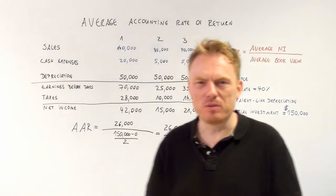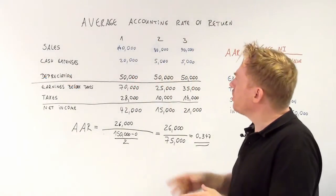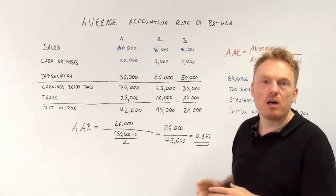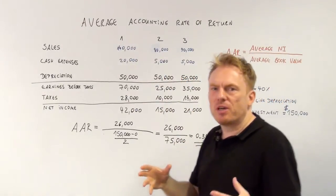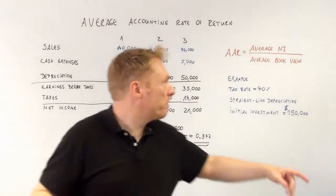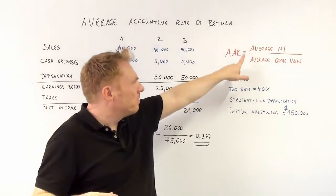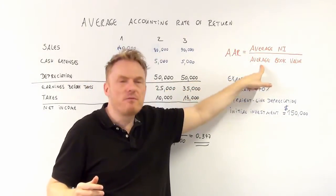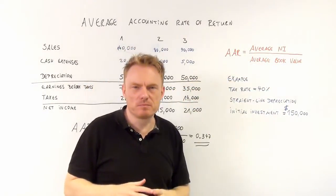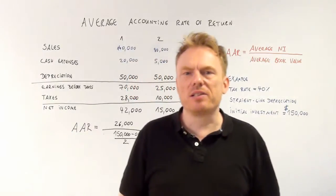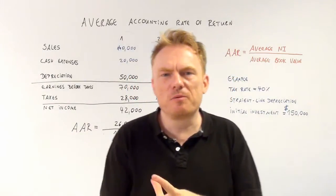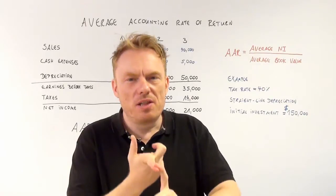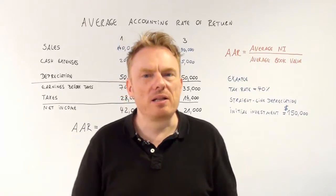Welcome to our next video. We're talking about the average accounting rate of return. The average accounting rate of return is equal to the average net income divided by the average book value. So we need to calculate net income first, and we need to calculate the average book value.